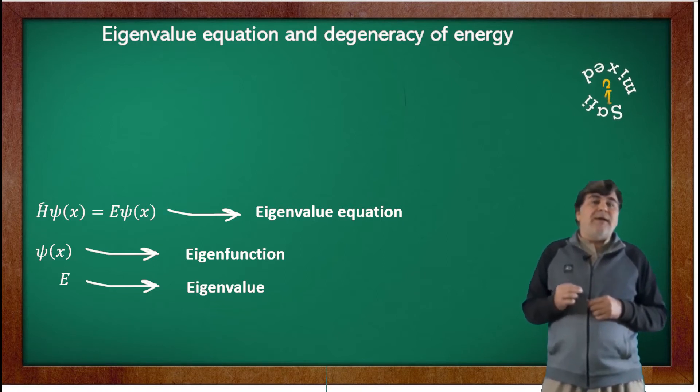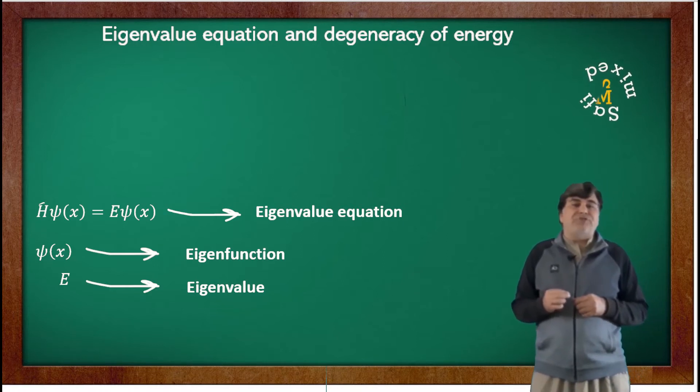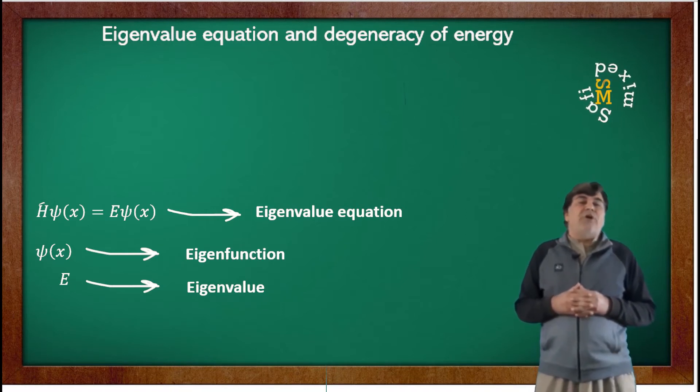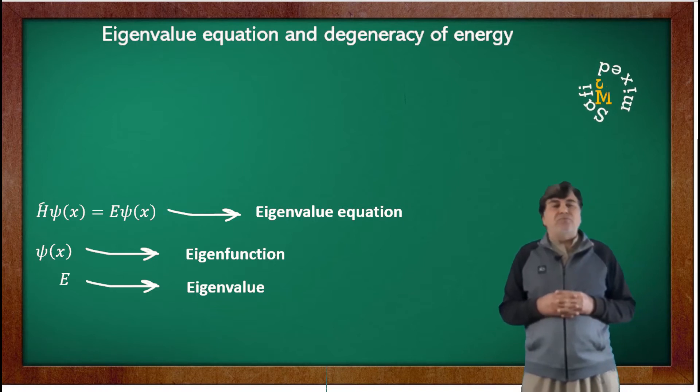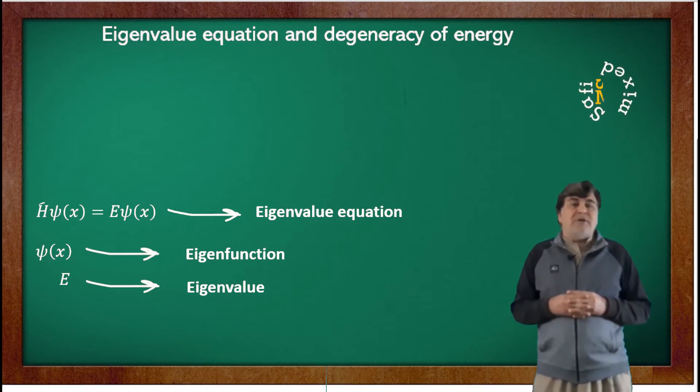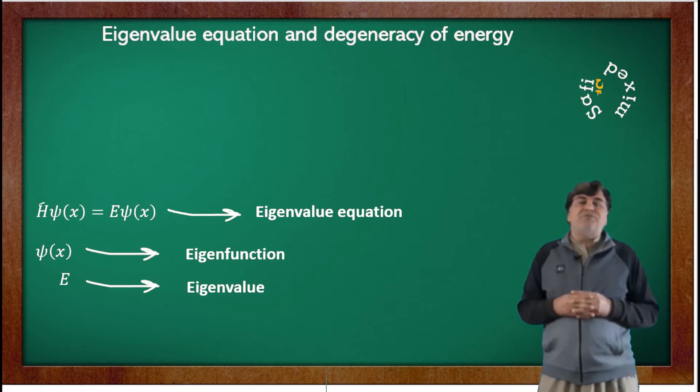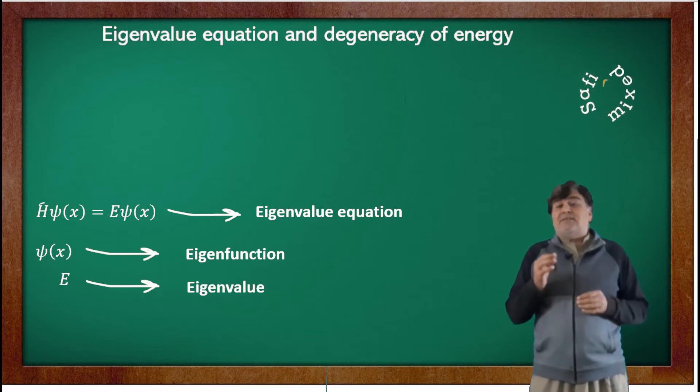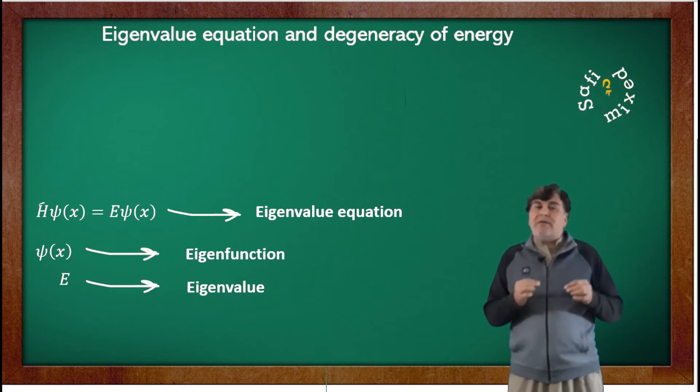Since Ĥ is the Hamiltonian, the eigenvalues E are called energy eigenvalues as well, because these are the possible energies of the system. When this is the case, the different eigenvalues and their corresponding eigenfunctions are differentiated from each other.